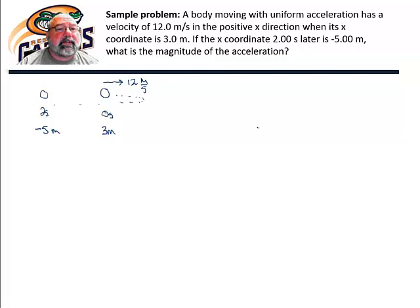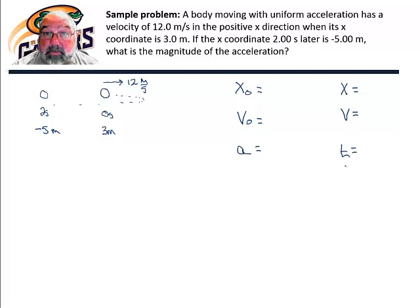There are six variables in kinematics that we will deal with. There's initial position. There's initial velocity. There's the acceleration. There's the final position. There's the final velocity. And there's the time interval. And we need to read our problem and determine what quantities we know to start with, what quantities we're looking for, and what quantities we really don't care about. They have no place in our problem.